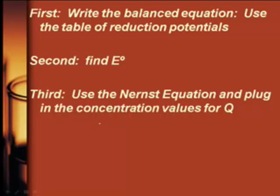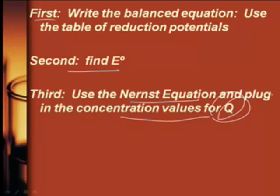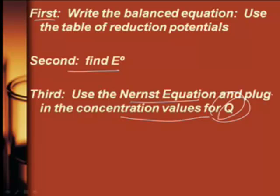And this is just kind of some steps for doing exactly what we just did. Write a balanced equation. Find E naught. Use the Nernst equation and plug in the concentration values for Q. Now, there is something called a concentration cell that we should chat about.